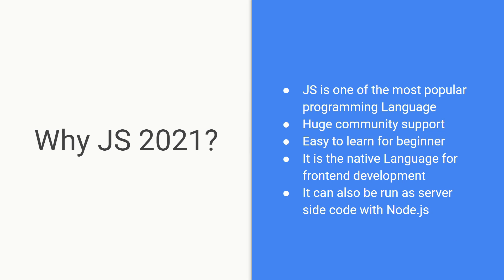JavaScript can also be run as server-side code with Node.js. Node.js is a JavaScript runtime environment built by a very talented programmer called Ryan Dahl since 2009. It is built on Chrome's V8 engine, written in C++. With the help of Node.js you can run JavaScript pretty much anywhere — on the server side, build relational databases, make API endpoints — making JavaScript one of the most versatile programming languages out there.